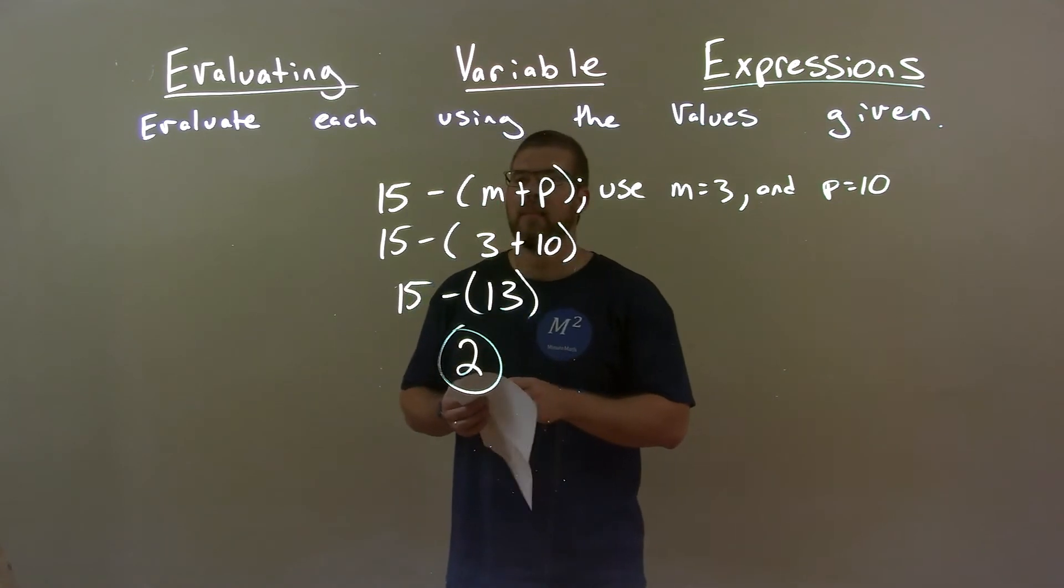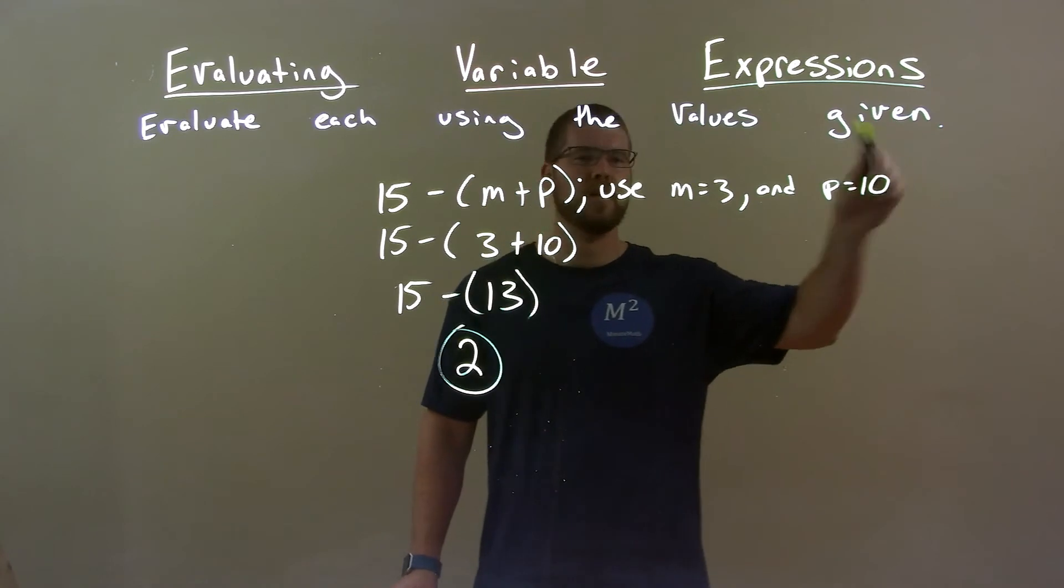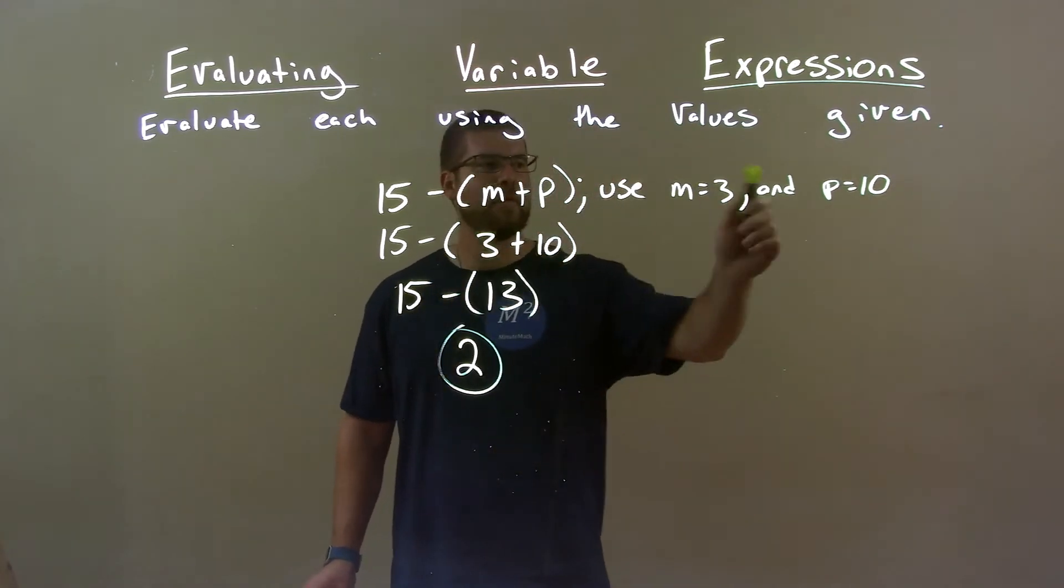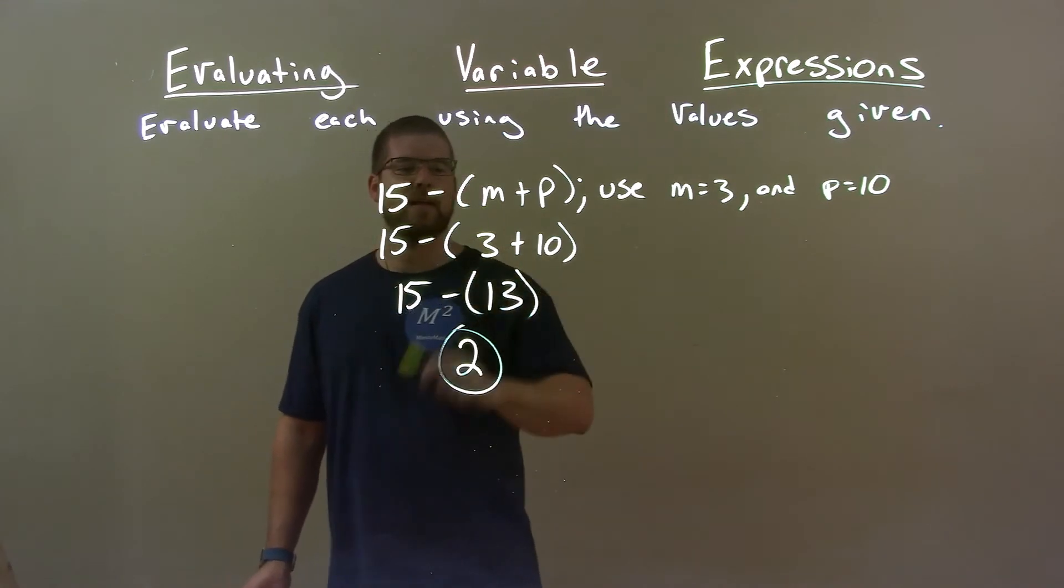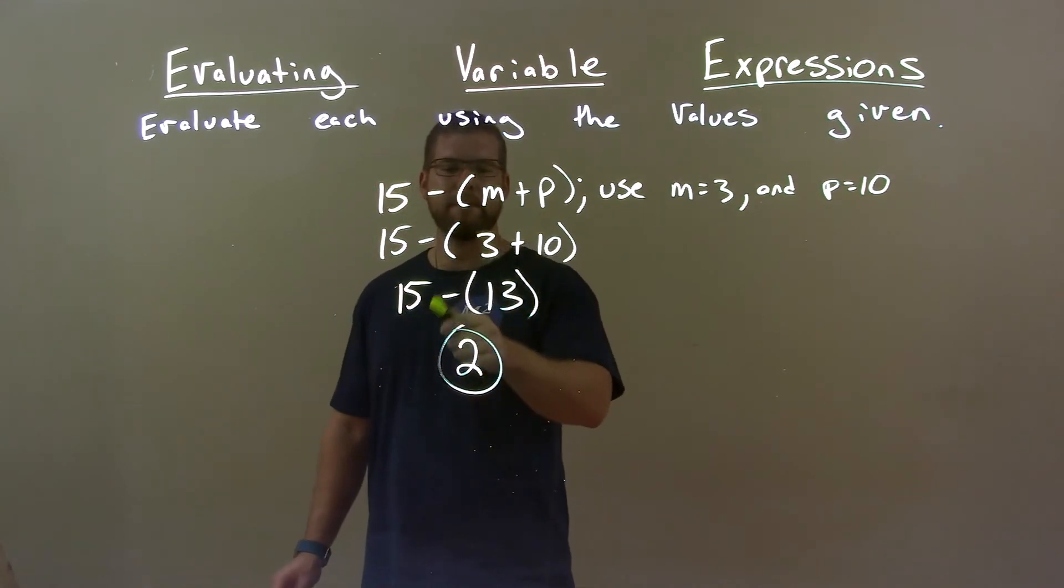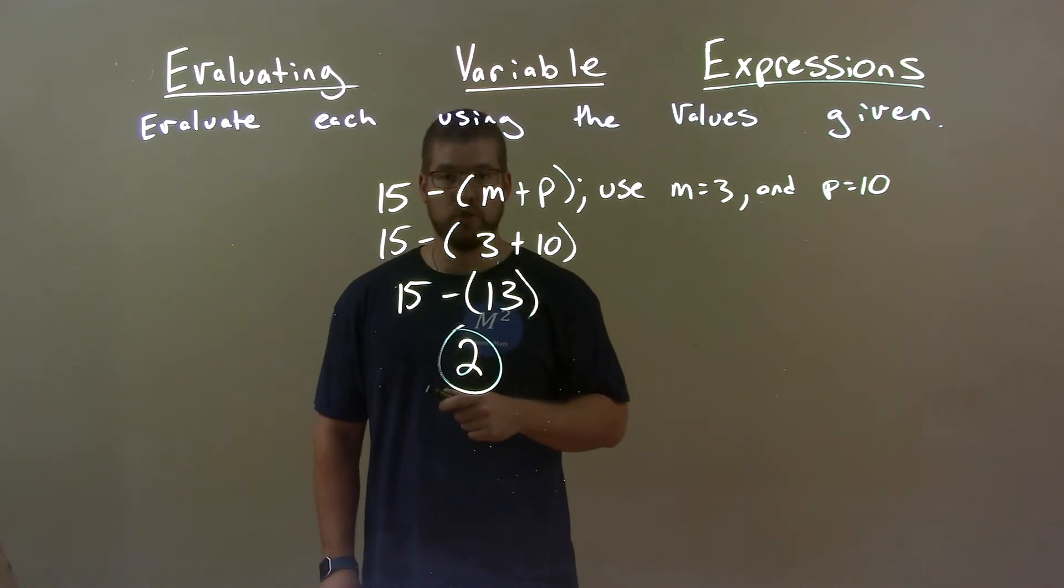Quick recap. We're given 15 minus M plus P, and we're using M to be 3 and P to be 10. Substituting M for 3 and P for 10 first. Then 3 plus 10 is 13. 15 minus 13 is 2. So, final answer is just 2.